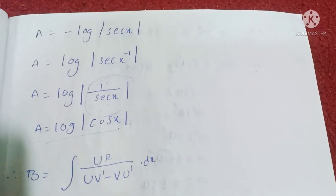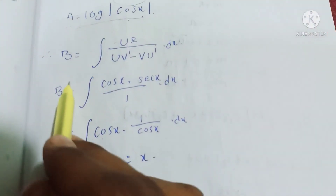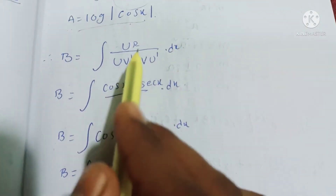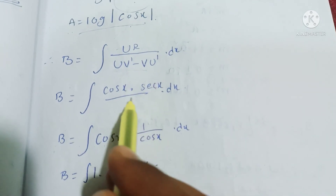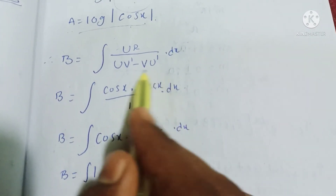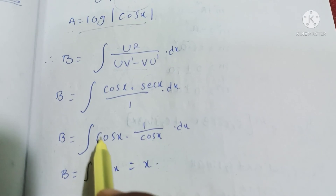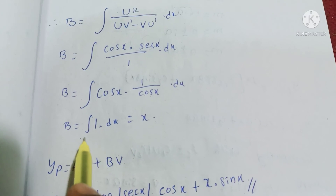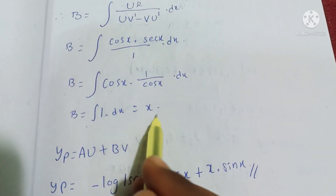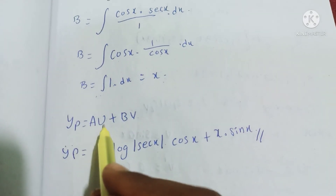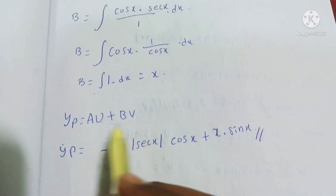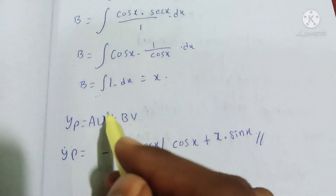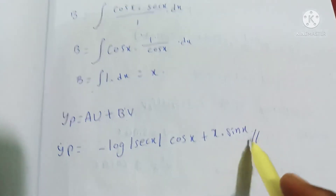So A = log|cos x|. Now B = ∫(uR / (uv′ − vu′)) dx = ∫(cos x · sec x / 1) dx. Since sec x = 1/cos x, cos x cancels, giving ∫1 dx = x. So B = x. The particular integral is yp = Au + Bv = log|cos x| · cos x + x · sin x.